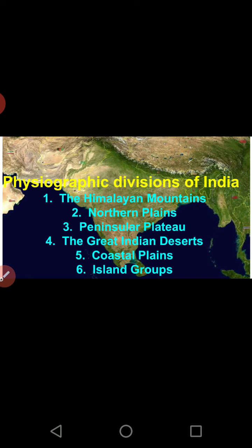The last physiographic division is the island groups — Lakshadweep islands in the Arabian Sea, and the Andaman and Nicobar islands in the Bay of Bengal. When we study all these physiographic divisions in detail, we will see their features, how they formed, their importance, and the important places within them.